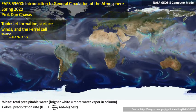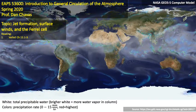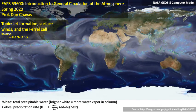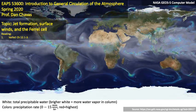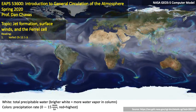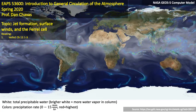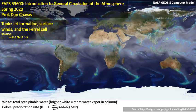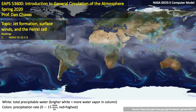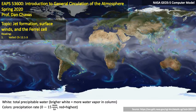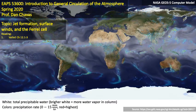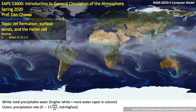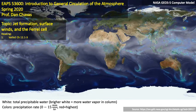This is the next virtual lecture for EAPS 536. The topic today will be jet formation, surface winds in the Ferrel cell. We're really going to be applying some of these complicated concepts from the last couple of lectures to thinking about the real atmosphere. The reading is Vallis chapters 12.1 through 12.3.